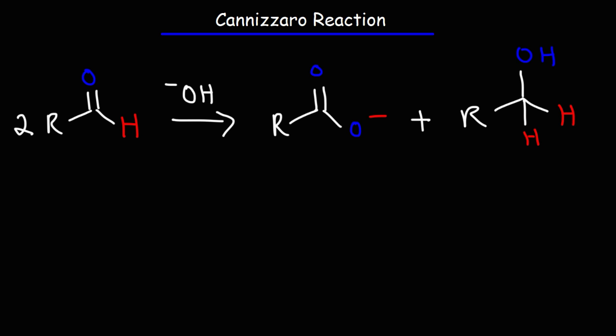Now, in order for this reaction to work, the alpha carbon cannot have any alpha hydrogen atoms. Because if it has alpha hydrogen atoms, this reaction can undergo the aldol reaction. But if there are no alpha hydrogens, then it's going to undergo the Cannizzaro reaction.